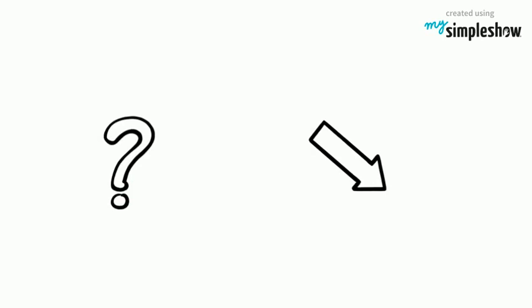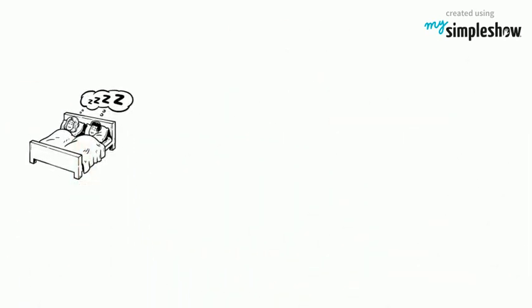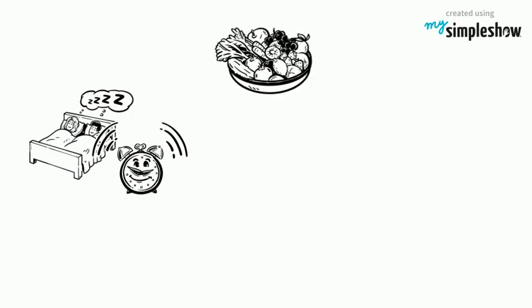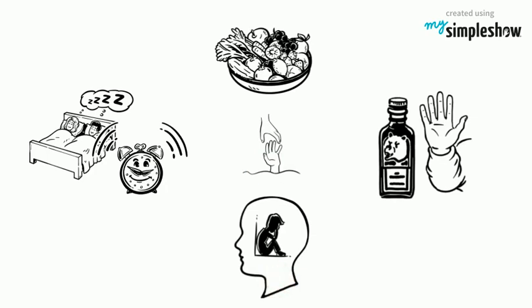How to reduce the symptoms of depression? Regular exercise helps create positive feelings and improve mood. Getting enough quality sleep on a regular basis, eating a healthy diet, and avoiding alcohol can also help reduce symptoms of depression.